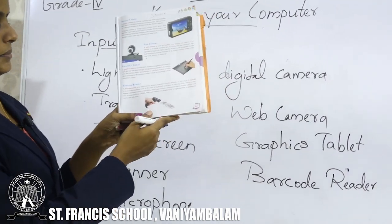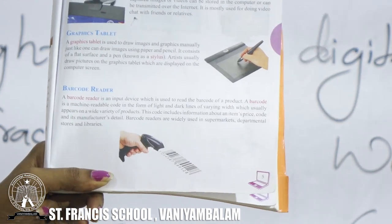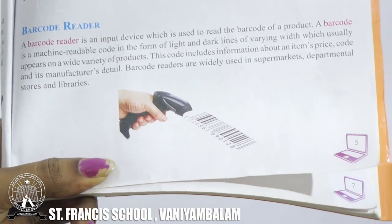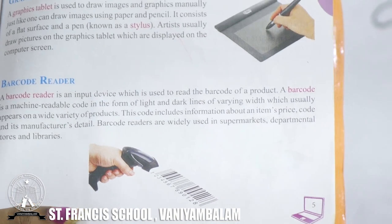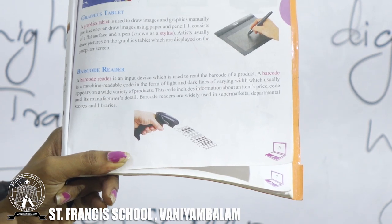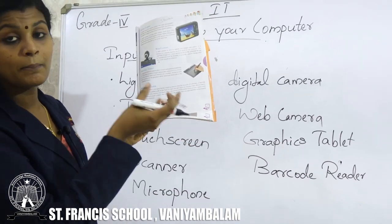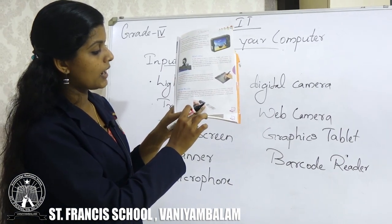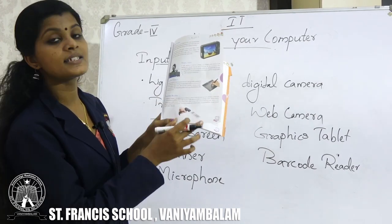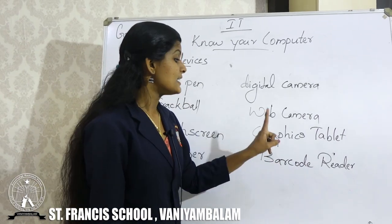The last input device is barcode reader. Its picture is in the textbook. Barcode reader is used to read the barcode of a product. A barcode is a machine-readable code. We can see barcode readers when we go shopping — the code on products is readable using this barcode reader.